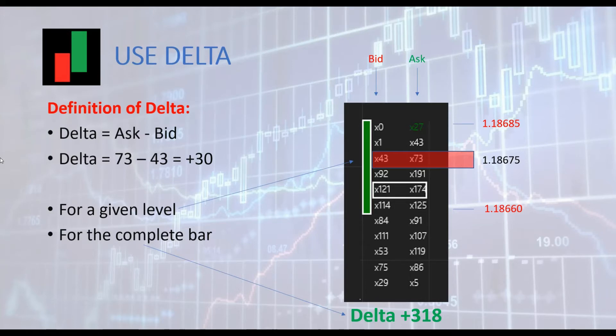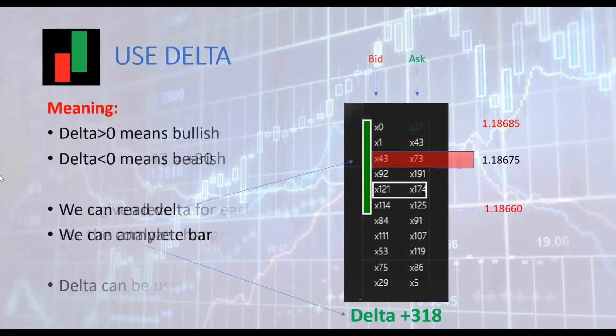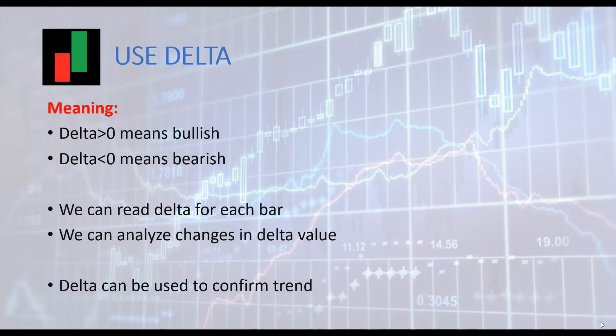Delta is by definition the difference between the ask and the bid. It can be calculated for a given price level, or it can be calculated for the bar. It is common to use the calculation for the bar, which gives more relevance to the indicator. Delta is a very useful indicator in order flow, for instance to evaluate the strength of a trend. Delta shows imbalance between aggressive buyers and sellers in the market. When delta is positive then we are bullish. When delta is negative then we are bearish.